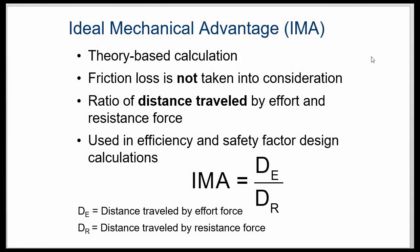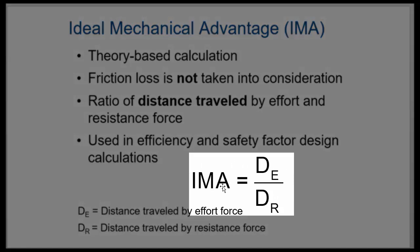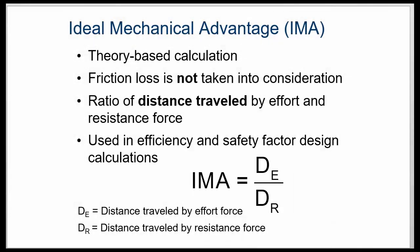Ideal mechanical advantage is the same formula when we're talking about all of these different simple machines. IMA, ideal mechanical advantage, is the distance of the effort over distance of the resistance. Always. It hasn't changed.